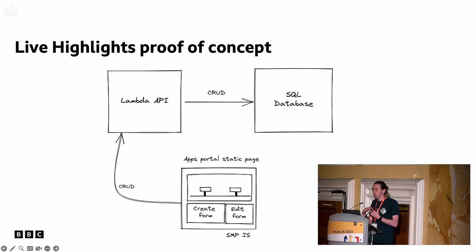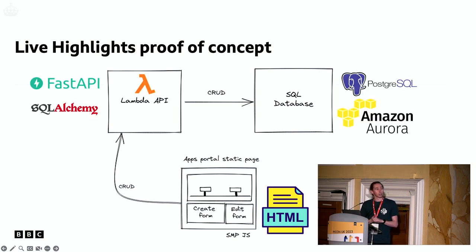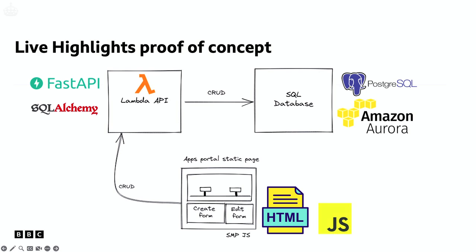We could also have CRUD operations — being able to create and manage those highlights from a web form on that page, just a static page. The tech stack initially looked something like this: a Lambda API implemented with FastAPI using SQLAlchemy to talk to a SQL database, which is a serverless instance of Postgres on Aurora. And we had this static HTML page with a bit of JavaScript going off and fetching those highlights from the database via the API.